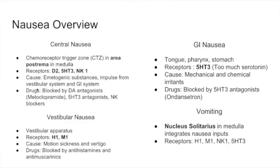The chemoreceptor trigger zone also receives impulses from the vestibular system and the GI system. This zone has certain receptors: dopamine receptors (D2), serotonin receptors (5-HT3), and NK1, which is the neurokinin-1 receptor. We can block central nausea by giving antidopamine drugs like metoclopramide, 5-HT3 antagonists like ondansetron, and neurokinin blockers.